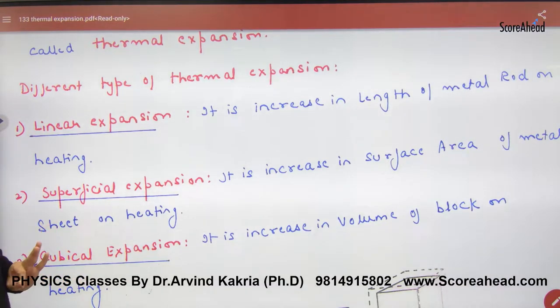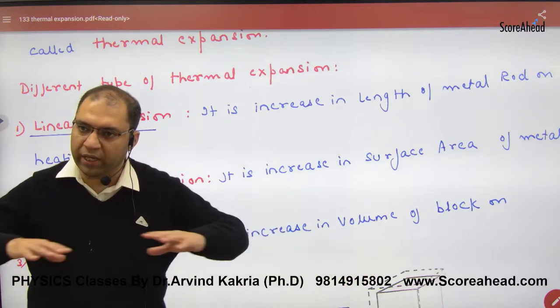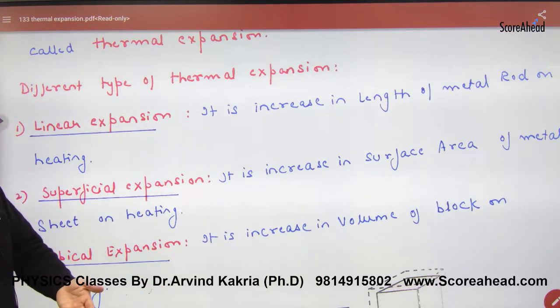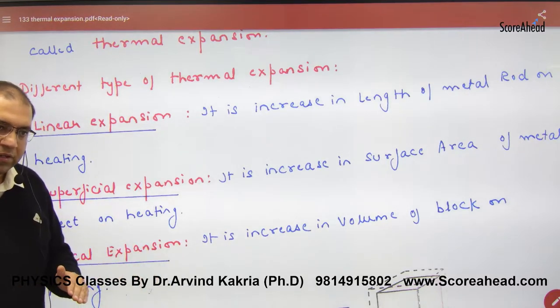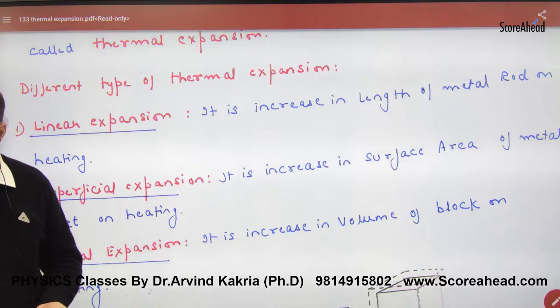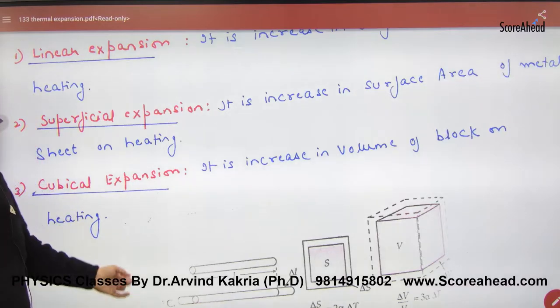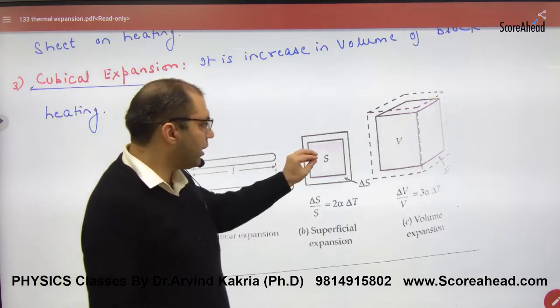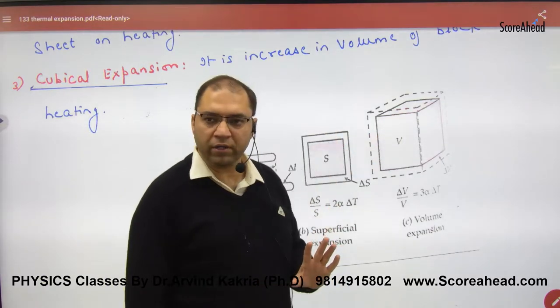First, linear expansion. Second, superficial, and last, cubical. Any substance will either increase lengthwise, area-wise, or volume-wise. If length increases with temperature, that's linear expansion. If surface area increases, that's superficial expansion. If volume increases, that's cubical expansion. The diagram represents this: length increase is linear expansion, area increase is superficial expansion, volume increase is cubical expansion.